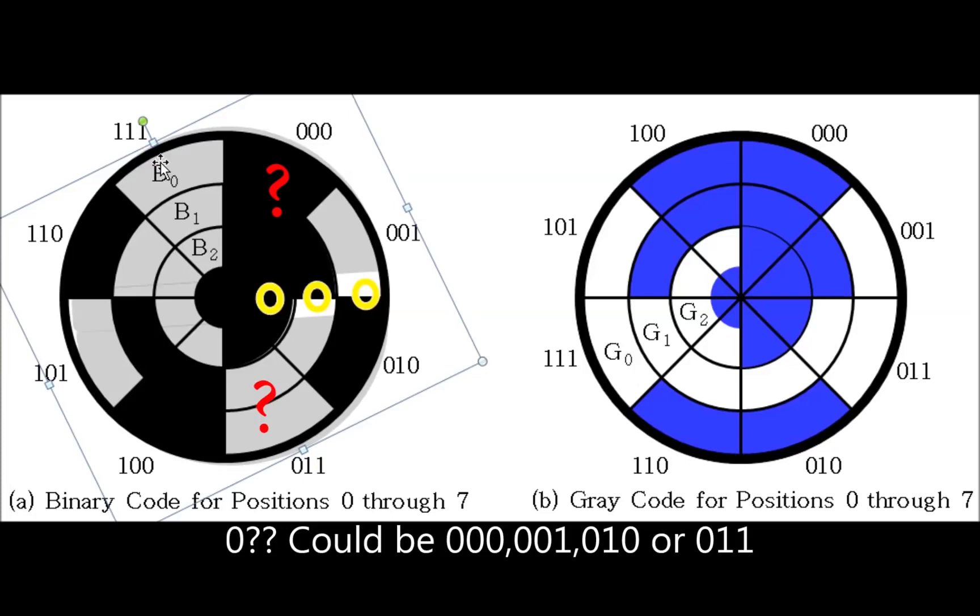This would also be a problem if the system was powered up with the encoder in this state. It may be that if you think you're at 000, you want the wheel to move forwards, when in actual fact, if it was at 010 at 2, then you'd want it to move backwards. And so due to your mistaken encoder reading, you actually move the motor in the wrong direction.